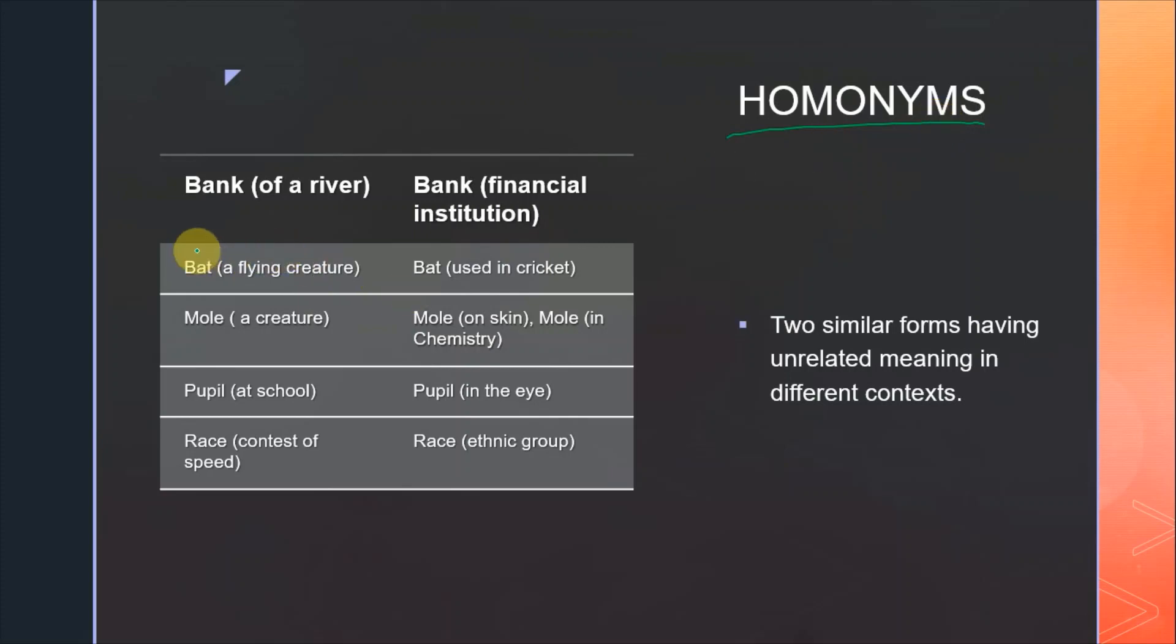For example, two similar forms have unrelated meanings in different contexts. So now it comes to that two words are the same. Spelling and pronunciation are the same, but their meanings are different.